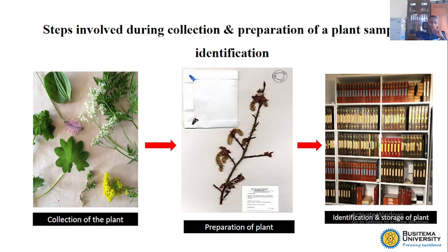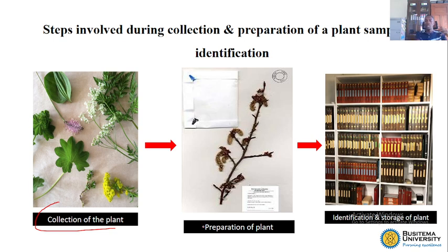The first step is collection of the plant. You need to know how to collect the plant and which materials you need. A careful collector must prepare it — for example, removing excess leaves, excess flowers, roots, and soils. Then you have to press it, applying pressure. After that, you have to mount it, and after mounting it, you transport it for identification.